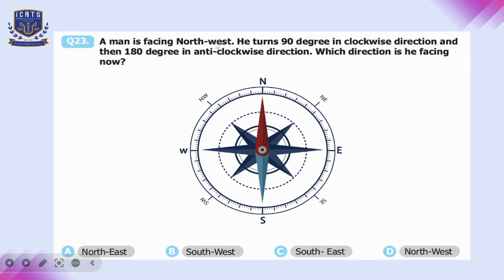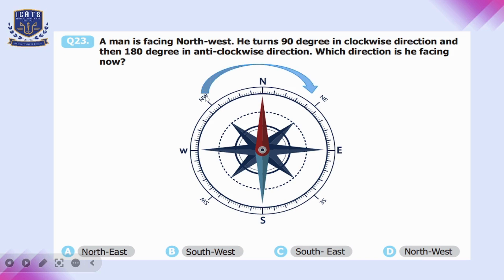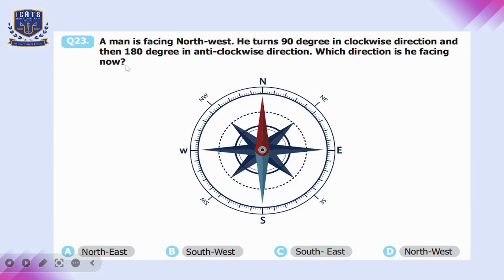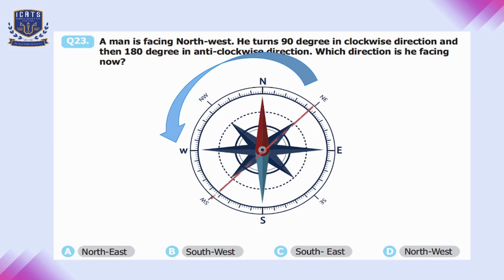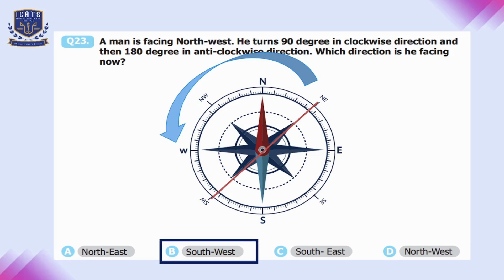Question number twenty-three: a man is facing northwest. He turns 90 degrees clockwise, which puts him facing northeast. Then he turns 180 degrees anti-clockwise. A 180-degree turn from northeast puts him facing southwest. So option B is correct — he is now facing southwest.